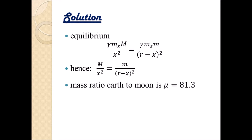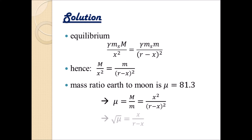We can use µ, because µ is nothing more than uppercase M divided by lowercase m. Looking at the previous equation, we divide both sides by m and multiply by x squared, giving us µ equals x squared divided by (r minus x) squared. We can solve this since x is the only unknown — we have µ and r. Let's make it easy: take the square root of the whole equation. The square root of µ on the left equals x divided by (r minus x) on the right.